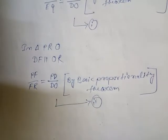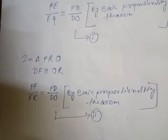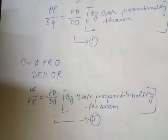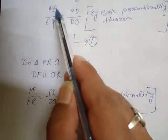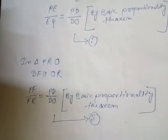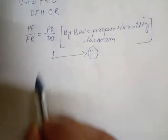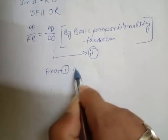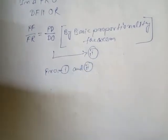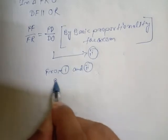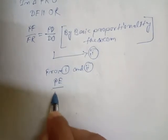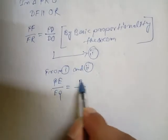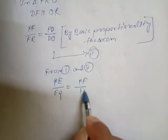From equations 1 and 2: PD by DO is the same in both. So we can say PE by EQ equals PF by FR. From 1 and 2, PE by EQ equals PF by FR.